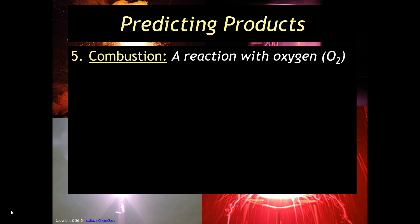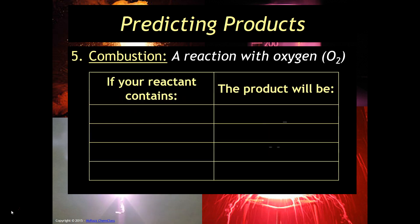The last type of chemical reaction is a combustion. This is a reaction that is basically defined by reacting with oxygen. So there's some really easy ways to tell what products you're going to get if a substance is reacting with oxygen.